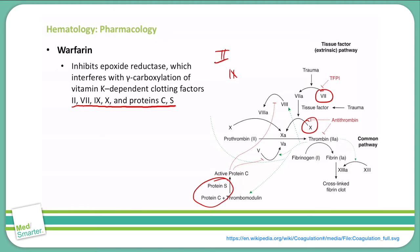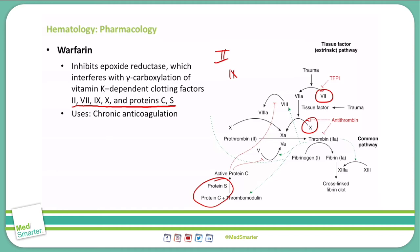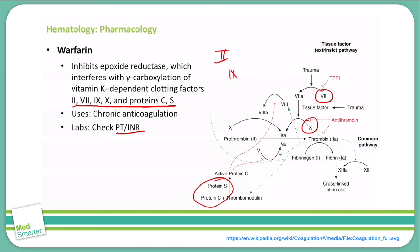What do we use warfarin for? Chronic anticoagulation. If a patient has an indication showing they need to be on anticoagulation for a long period of time due to hypercoagulability, we will use warfarin as one of the most common medications to anticoagulate. A downside is that it requires us to check labs — specifically PT and INR weekly — to ensure we are within a therapeutic range and not over- or under-anticoagulating.